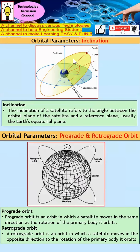Next, what is inclination? The inclination of a satellite is the angle between the orbit plane of the satellite and the reference plane, which is most of the time the equator plane. As you can see, this blue line is the equator plane, and the angle between the satellite orbit and the equator plane is what we call the inclination.